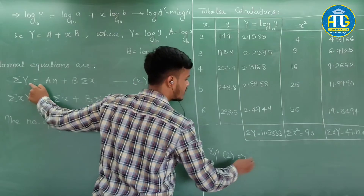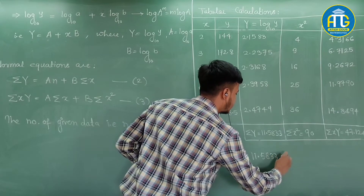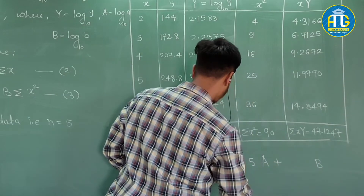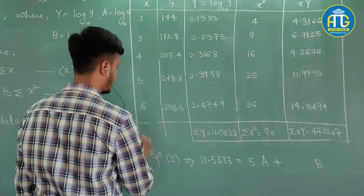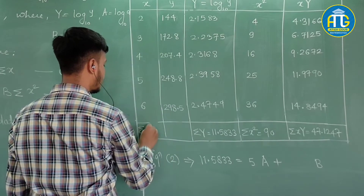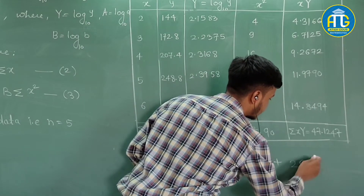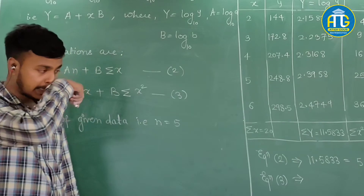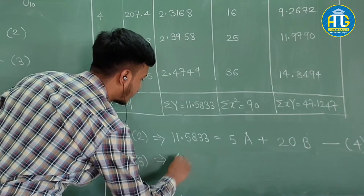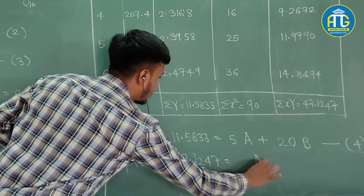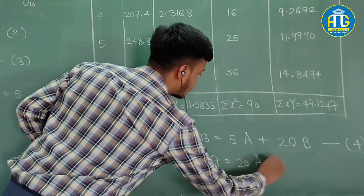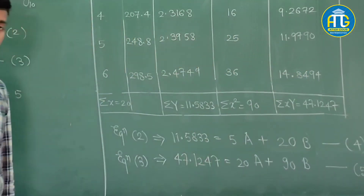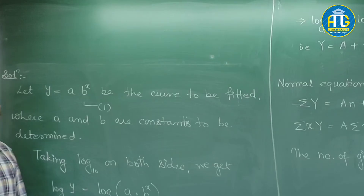Equation 2: ΣY = 11.5833 = 5A + 20B. This is equation 4. Equation 3: Σ(xY) = 47.1247 = 20A + 90B. This is equation 5. Where Σx = 20 and Σx² = 90. We now have 2 equations and 2 unknowns — A and B. After solving equations 4 and 5, we get A = 2 and B = 0.07915.